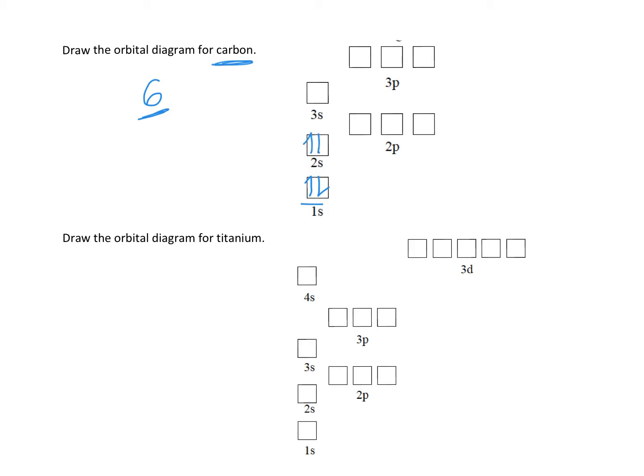We fill from the bottom up. I have to fill 1s before I go to 2s, and then 2p. I've placed four, I have two left. The rules are I have to put one in each before I pair them, and they should have the same direction - that's at lower energy. This is the orbital diagram of carbon. It has six electrons filling these orbitals.